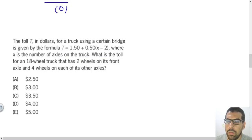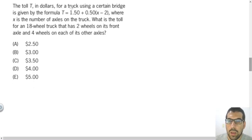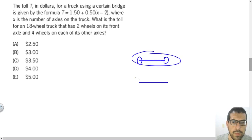So the question asks, what is the toll for an 18-wheel truck that has two wheels on its front axle and four wheels on each of its other axles? Let's think about it. We have the formula to evaluate the toll. And the question told us that the truck will be an 18-wheel truck with two wheels in the front. So in the first axle, I just have two wheels, and four wheels on each other axle. So in total, I need to have 18 wheels. So I have two in front again.